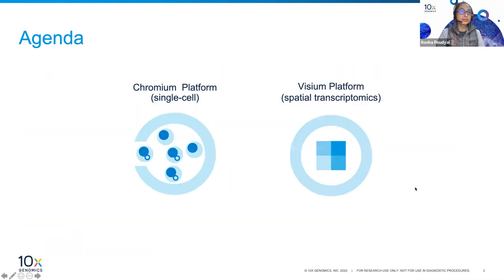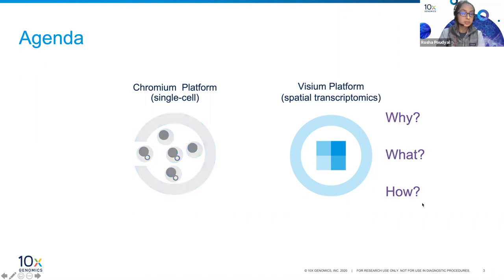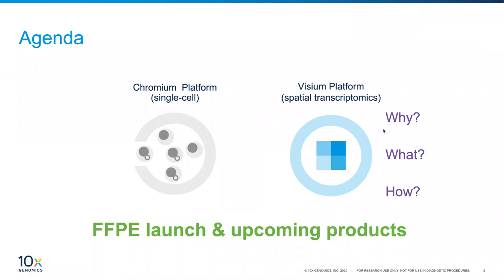When thinking about 10x Genomics solutions, there are currently two platforms: the single-cell platform—a tiny toaster-sized instrument that runs all of our single-cell assays—and the Visium spatial transcriptomics platform. We'll start with the broad question of why spatial biology is important, followed by what kinds of questions people are answering with this technology, and then how you can get started. The Visium solution currently supports fresh frozen tissue, but we are launching FFPE support. I'll give a brief overview of the similarities and differences between fresh frozen and FFPE biochemistry, plus something exciting coming up with Visium as well.